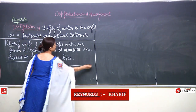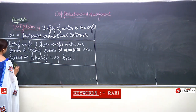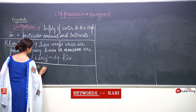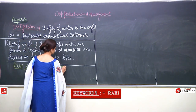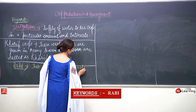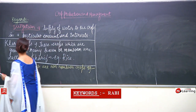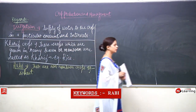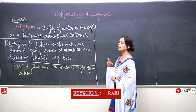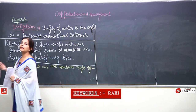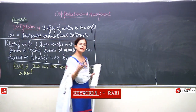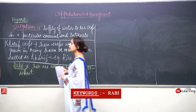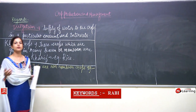At the same time, let's take Rabi also. Rabi crops are non-monsoon crops. An example is wheat. Crops need a particular kind of climatic conditions — they need a particular amount of water and a particular amount of sunlight. Few need more sunlight, few need more water. Different crops need different climatic conditions, and each climate cannot be suitable for all crops.